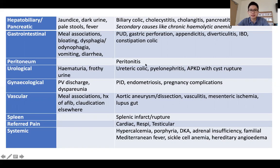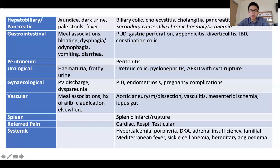Peritoneal causes — peritonitis can be surgical, or in the context of familial Mediterranean fever, the abdominal pain can be quite peritonitic sounding. For urological causes where stones can form, secondary causes such as hypercalcemia with ureteric colic would be a differential to entertain. Gynae causes are not very common but important to consider. Vascular causes are important not to exclude — vasculitis or gut claudication from underlying atrial fibrillation would be a differential if the abdominal pain is intermittent and associated with meals.